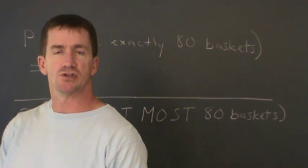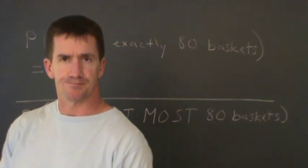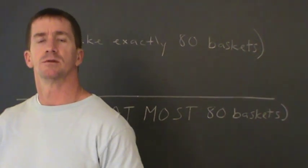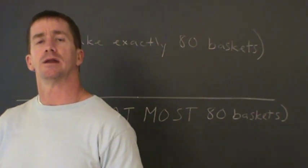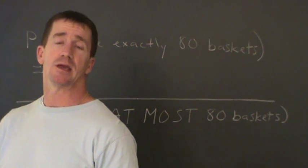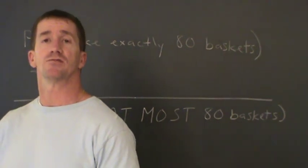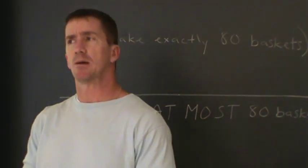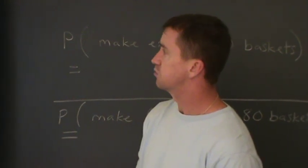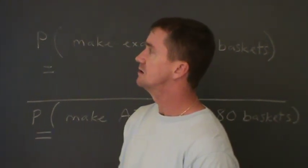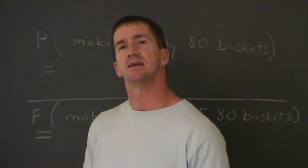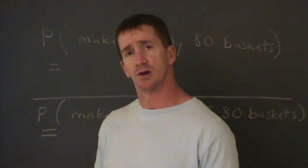We have a binomial distribution here. Someone's going to shoot 100 free throws, and they have an 80% success rate — they make 80% of the free throws. We're going to talk about the probability that this person makes exactly 80 of the 100 free throws.